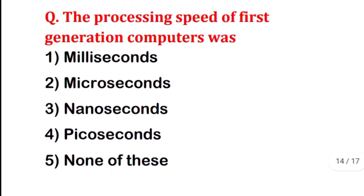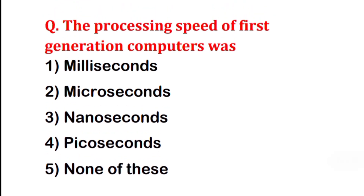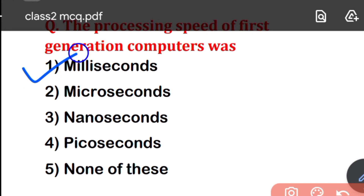The processing speed of the first generation computer was which unit? Options are: Milliseconds, Microseconds, Nanoseconds, Picoseconds, or None of these. The correct answer is Milliseconds — the first generation computer had processing speed measured in milliseconds.